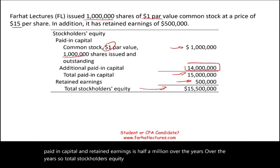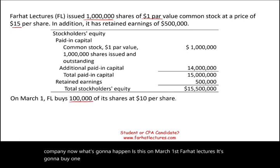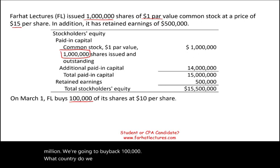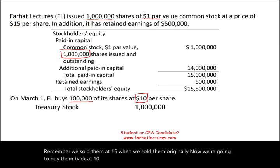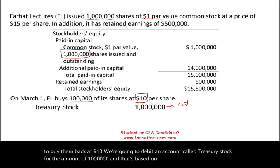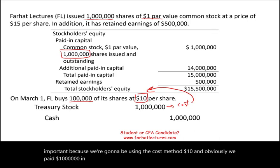On March 1st, Forehead Lectures buys back 100,000 of its shares. We have one million shares total; we're buying back 100,000. We pay $10 per share — remember we originally sold them at $15. We debit an account called Treasury Stock for $1 million, based on cost. The cost method is important here. We credit cash $1 million.